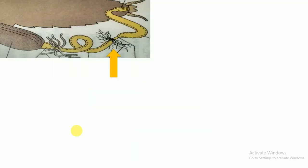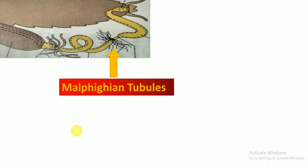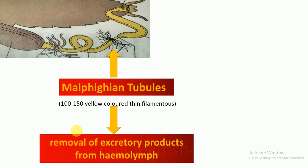At the junction of the midgut and hindgut, 100 to 150 yellow-colored filamentous structures called Malpighian tubules are present. These help in the removal of excretory products from the hemolymph, which is the colorless blood of the cockroach.